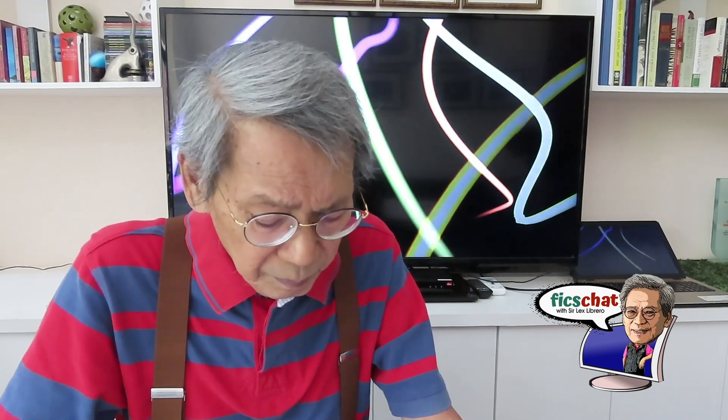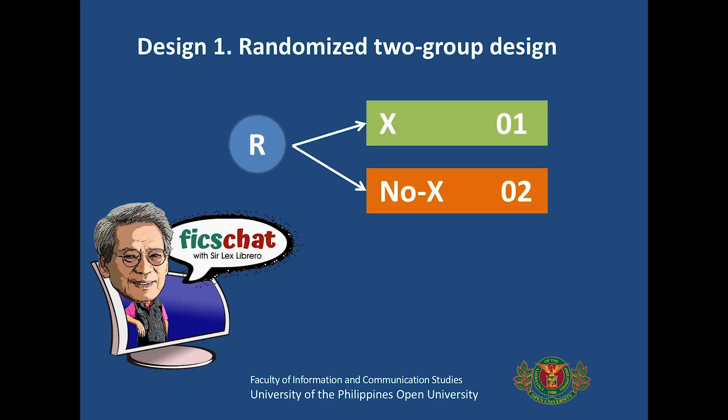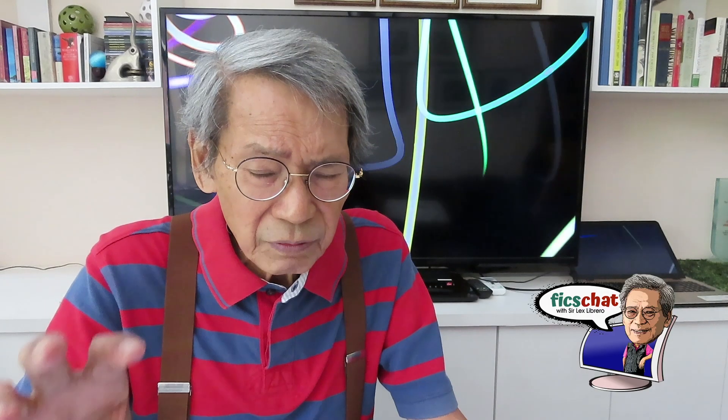In the meantime, let us talk about quantitative designs, or the experimental designs. There are a few of them. The first one is naturally called Design One. Design One refers to a randomized two-group design. You randomly assign respondents to pre-identified groups, such as the experimental groups and the control groups. Then observations are made from the group after the introduction of treatment.